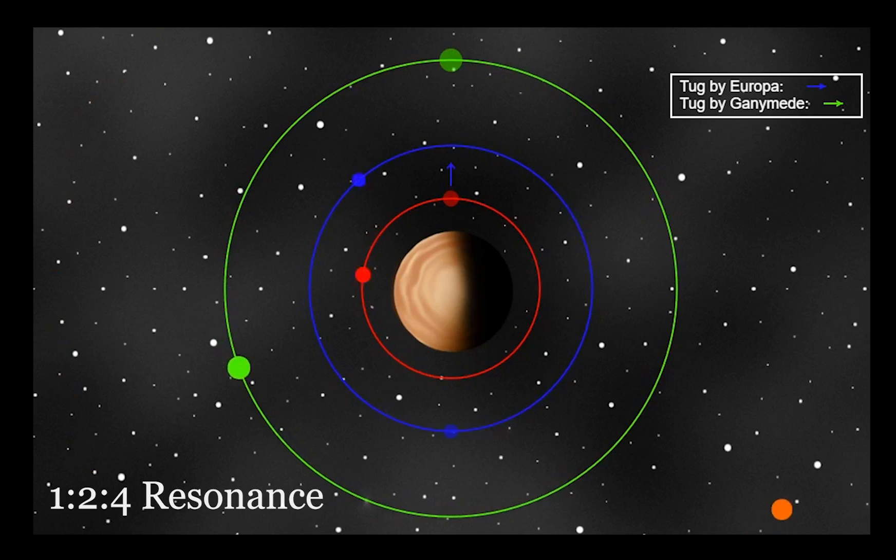Thus, both Europa and Ganymede regularly gravitationally pull Io in the same direction, shown here by arrows, elongating the orbit.